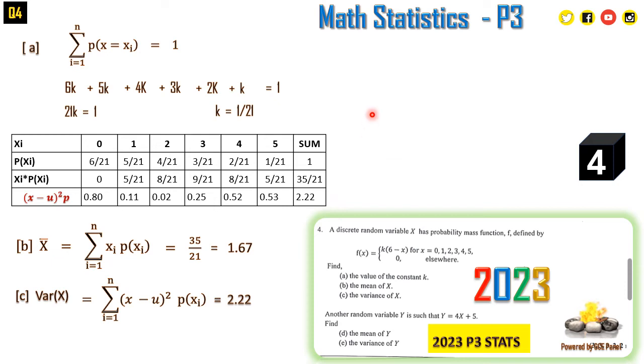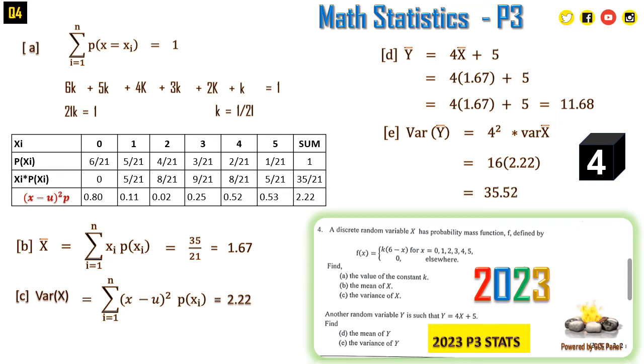For part d, please don't forget to subscribe and share. Another random variable Y is such that Y = 4X + 5. From here, the mean of Y will be equal to 4 times the mean of X plus 5. So we have 4 × 1.67 + 5, which equals 11.68. The variance is given by the coefficient of X squared. So Var(Y) = 4² × Var(X) = 16 × 2.22 = 35.52. This constant 5 does not affect the deviation.